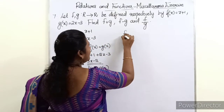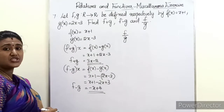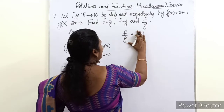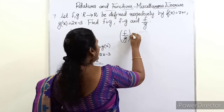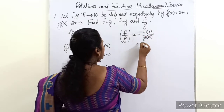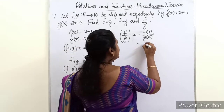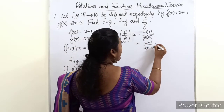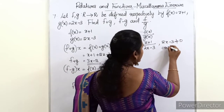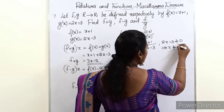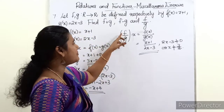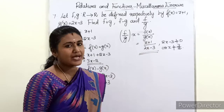The third one: f divided by g. The formula is (f/g)(x) = f(x)/g(x). Here f(x) = x + 1, so f/g = (x + 1)/(2x - 3). The condition is 2x - 3 should not be equal to 0, or in other words x should not be equal to 3/2. This cannot be simplified further. So f/g = (x + 1)/(2x - 3).